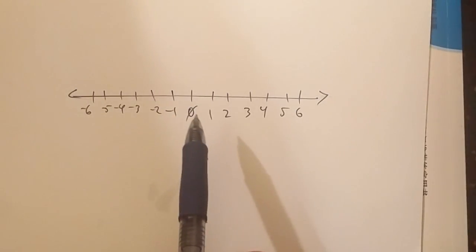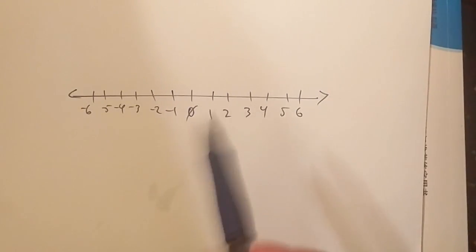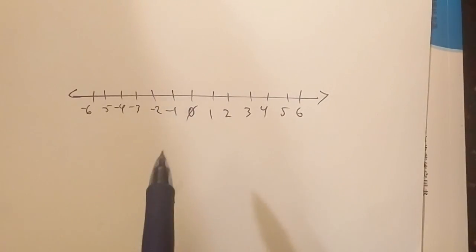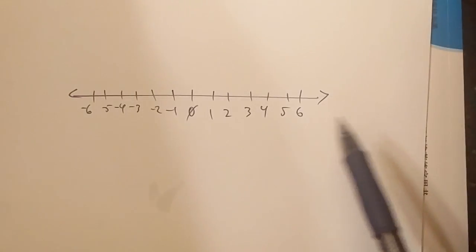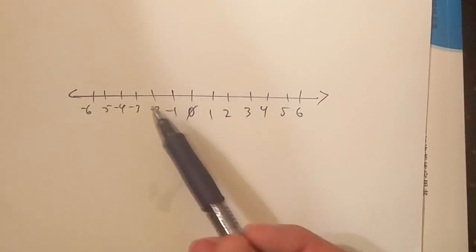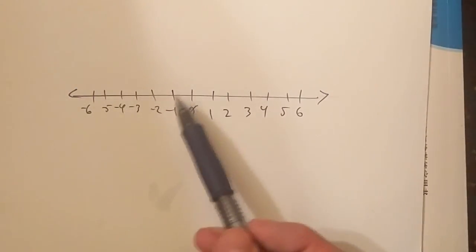We talked about absolute value, which is the distance from zero in either direction, and we also talked about opposites. The opposite of a number is the same distance from zero, but in the opposite direction.